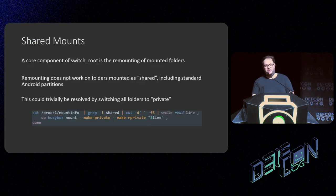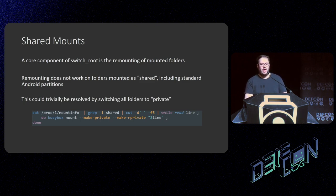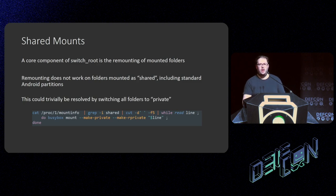There were a few caveats: `switch_root` is intended to switch from one init RAM FS to another, and you're meant to reboot to get into other systems. A core component of `switch_root` is the remounting of mounted folders. However, most mounted folders in Android at this point are shared, meaning they're handled differently when it comes to moving mounts. This could be trivially resolved by using a small shell script that went through all the mounts, found out if they were shared, and made them private — meaning they could be moved wherever I wanted within the filesystem.